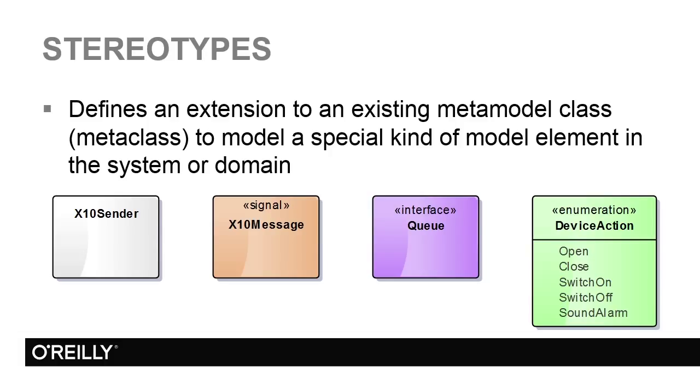On the left of this diagram is a class, and then the three other elements are a signal, an interface, and an enumeration. All of which are based on the metaclass class but have been extended to represent specific types of elements. The stereotype is shown in guillemets which are used as speech marks in French and not to be confused with guillemots which are a black and white seabird.